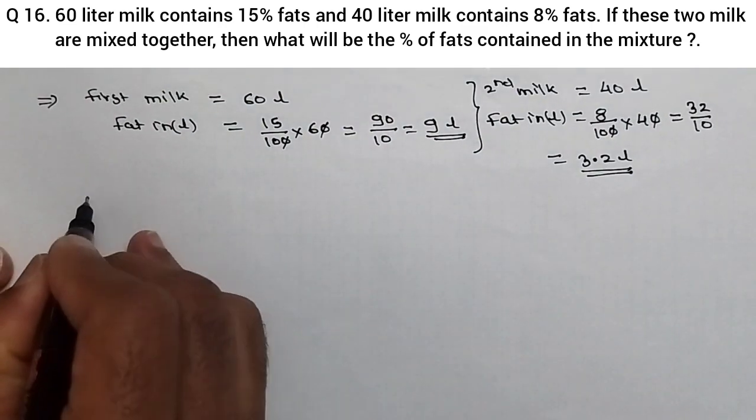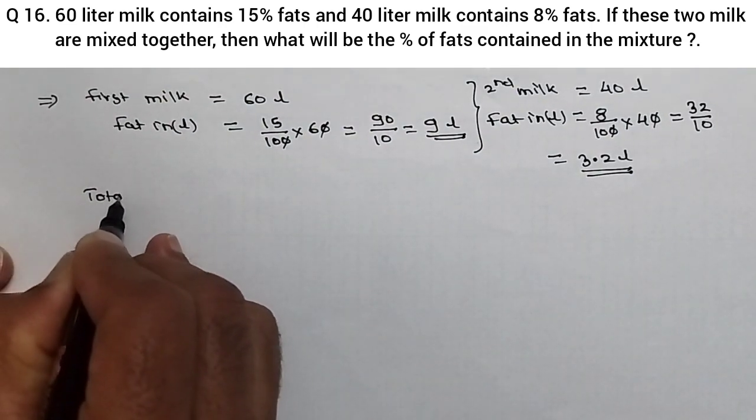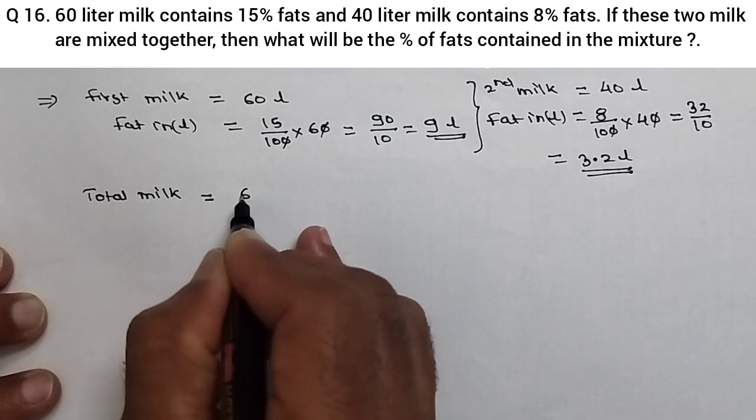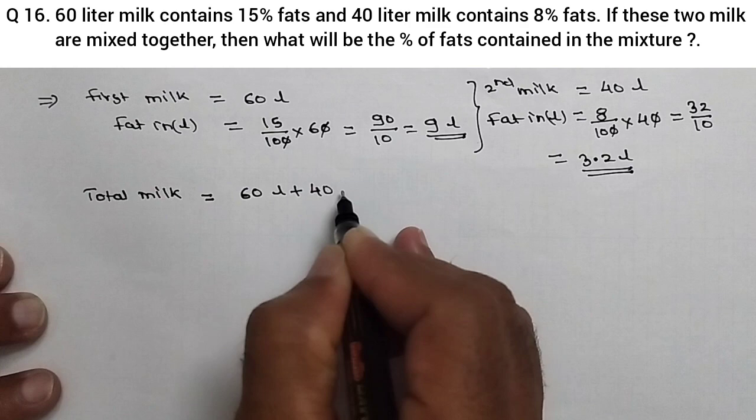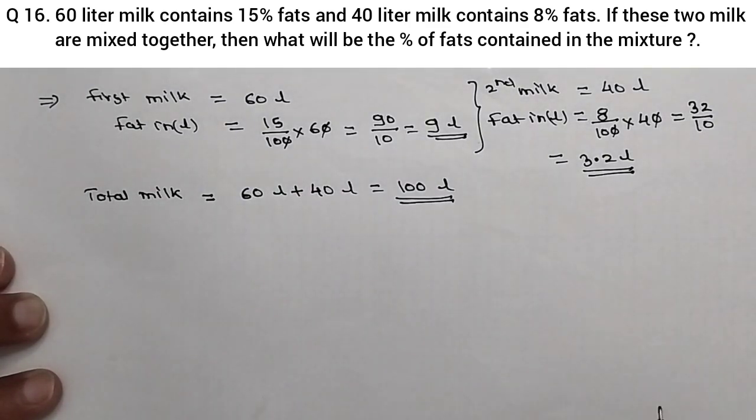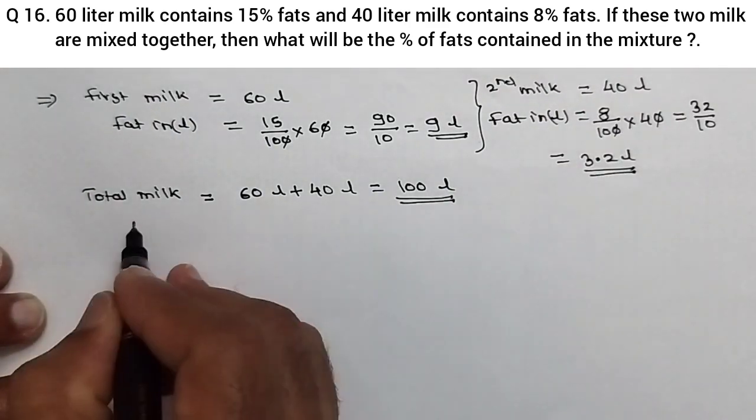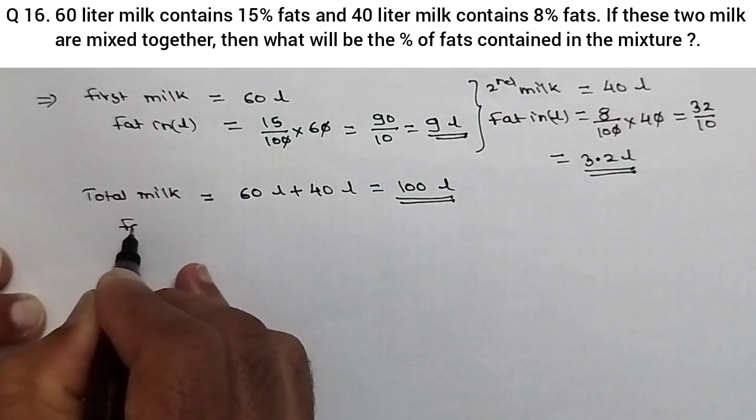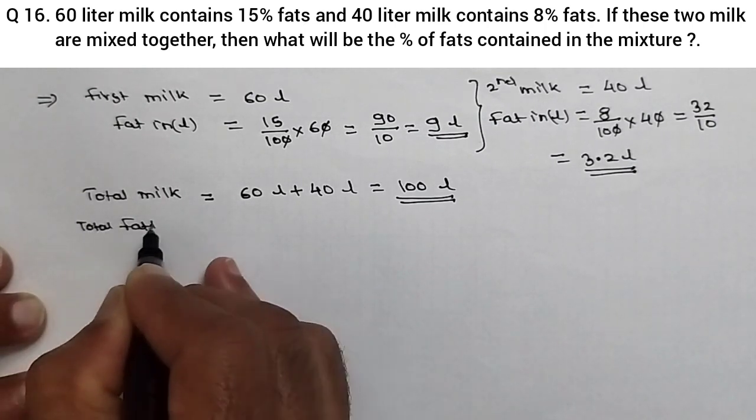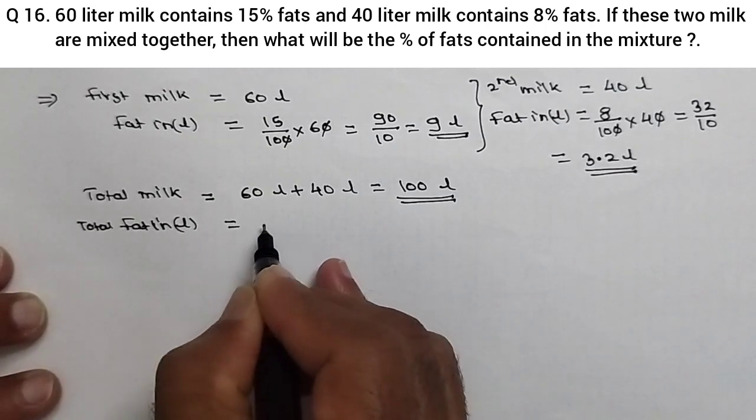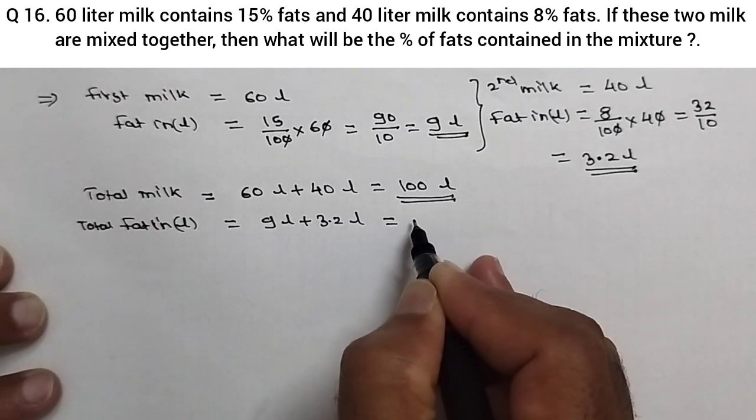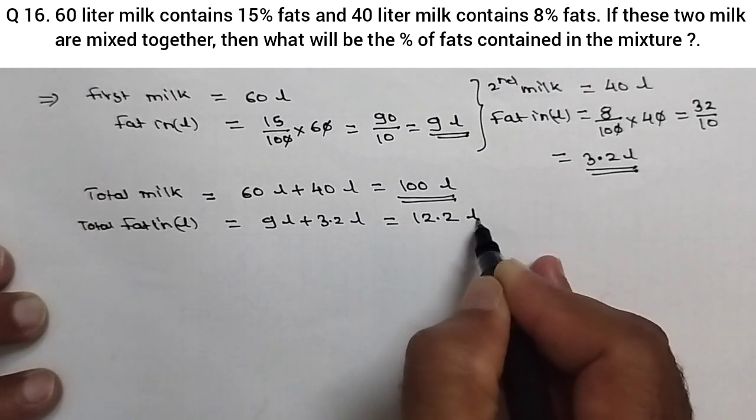So if we mix the two milks, total milk when we mix it, that will be 60 liter plus 40 liter, that will be equal to 100 liter, isn't it? And similarly, fat we can also add. So total fat in liter, that will be equal to 9 liter plus 3.2 liter, that will be equal to 12.2 liter.